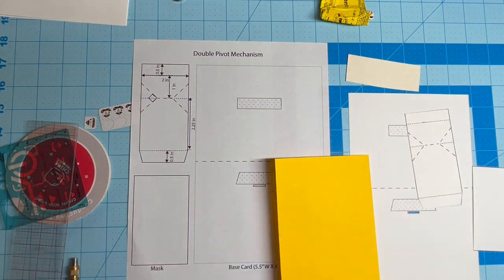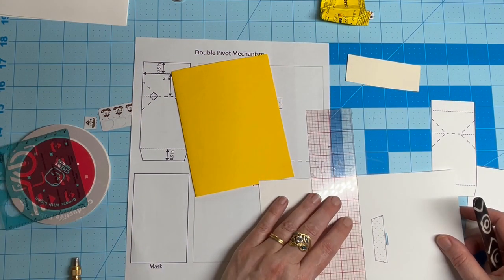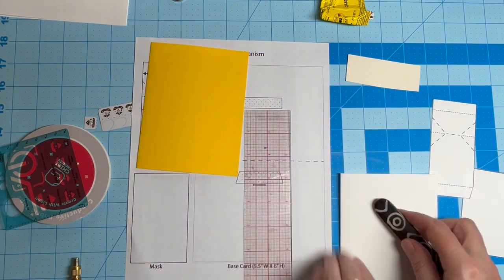In addition to your base card, which you'll be building your pop-up on, you'll also need a backing sheet the same size. I'm using yellow for this.